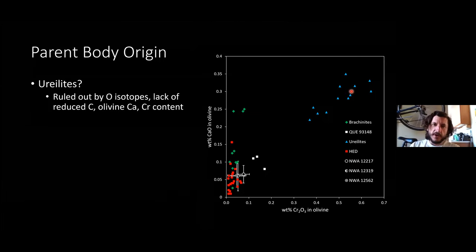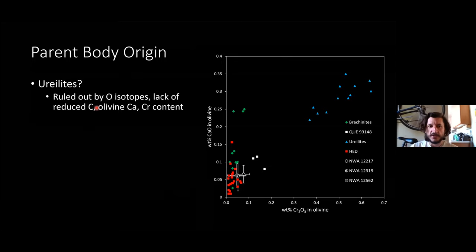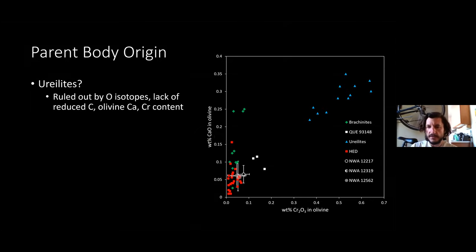In terms of parent body origin, are these related to ureilites? According to the oxygen isotopes, no. There's also no reduced carbon in any of these meteorites. Looking at olivine calcium and chromium content, all three meteorites group pretty tightly — really low in chromium and calcium in olivine. The ureilites plot elsewhere. What about angrites? Also unlikely given olivine calcium content — angrites would have weight-percent levels of calcium in olivine, way off the chart, and their Fe/Mn is about twice as high.